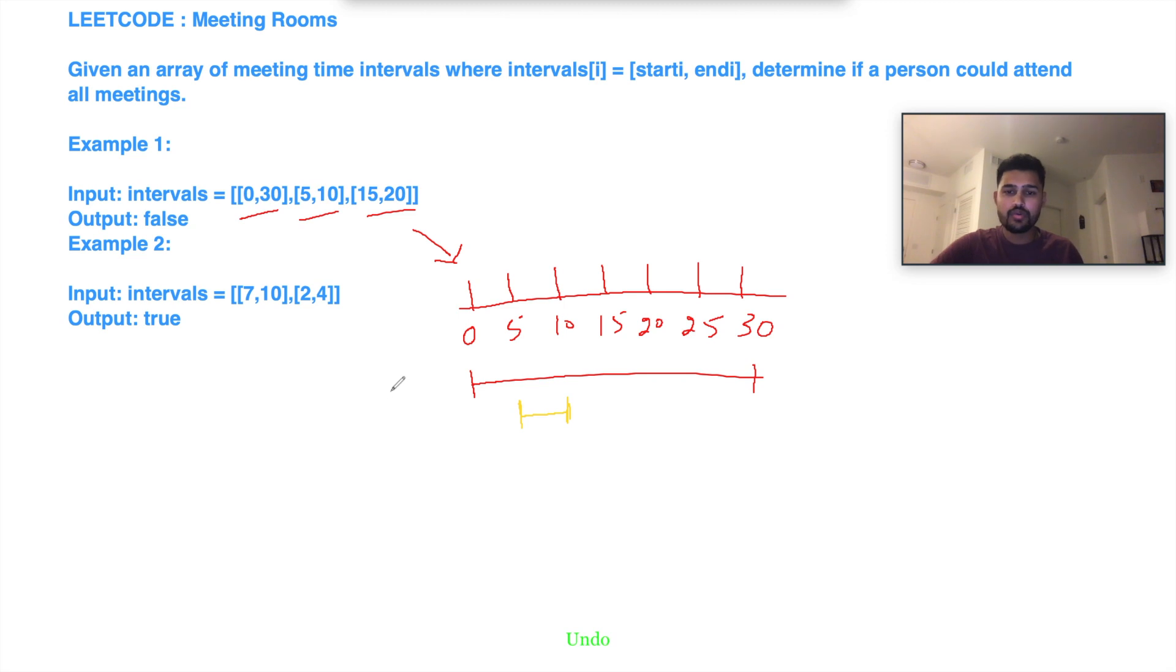Let's go to the second example. The first interval is [7,10]. So someone will start somewhere here and go till here. This is 7 and this is 10. And the second is [2,4]. So he'll start here and here. Basically, he'll start at 2 and end at 4, and then he'll come out of the meeting. After 3 minutes, he'll go into the second meeting.